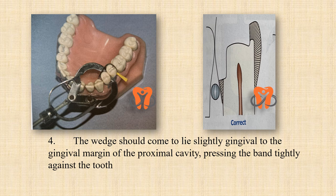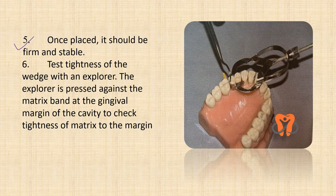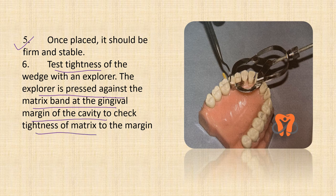The wedge should be inserted in such a manner that it comes to lie gingival to the gingival margin of the cavity — that means below the gingival margin of the cavity. Once the wedge is placed it should be firm and stable. To check for the tightness of the wedge, we use an explorer. The explorer is pressed against the matrix band at the gingival margin of the cavity to ensure that the matrix is tightly held against the margin of the cavity, and this happens with the help of a wedge.